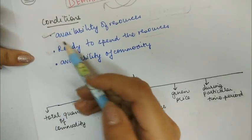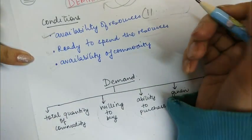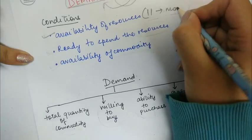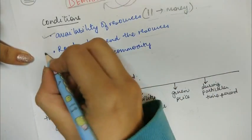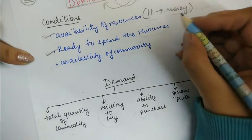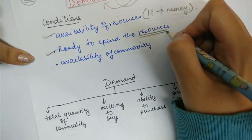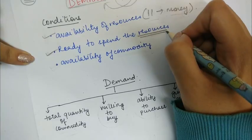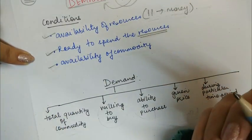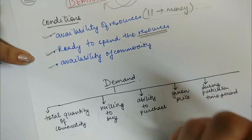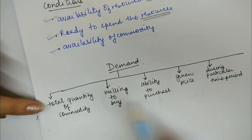The first condition is the availability of resources — you should have the purchasing power, that is the money, to buy the commodity. The second is the readiness to spend those resources to obtain the commodity. The third is the availability of the commodity in the market.